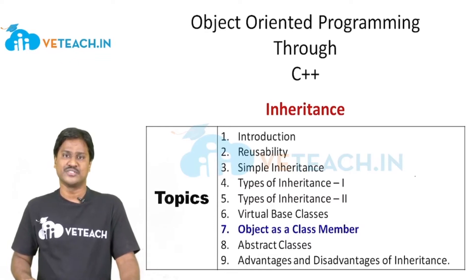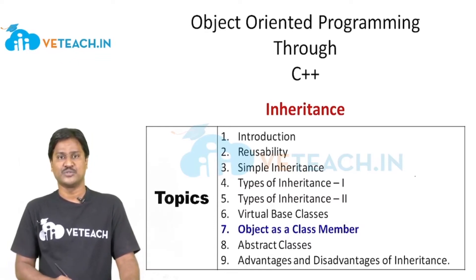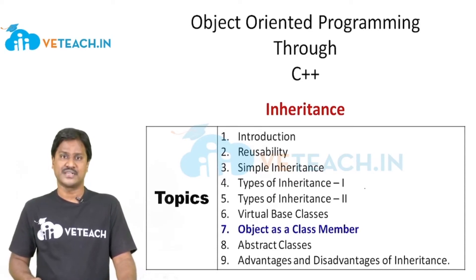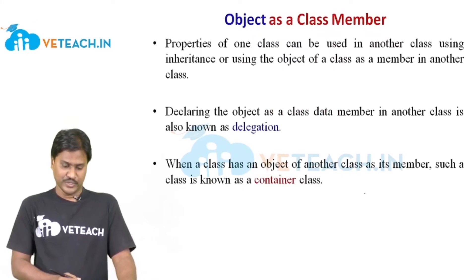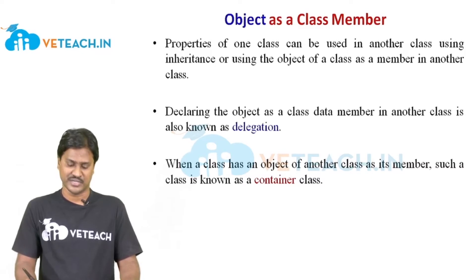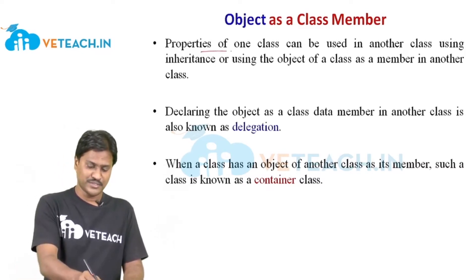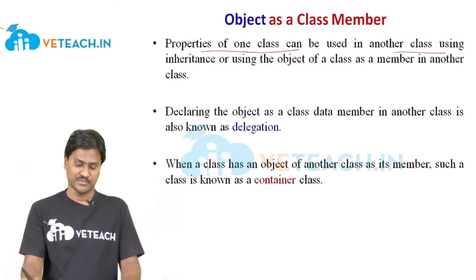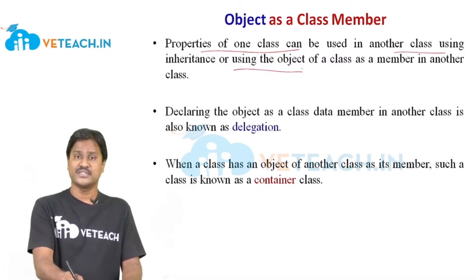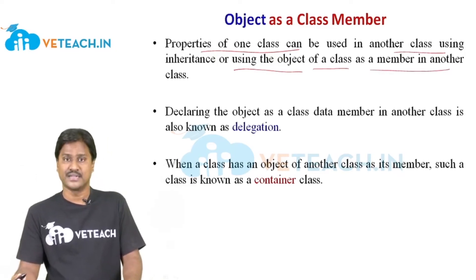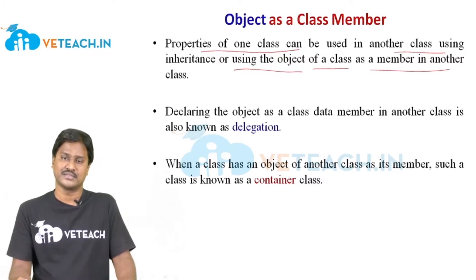Hello friends, welcome to Vteach. Object-oriented programming through C++, session: inheritance, and topic is object as a class member. We learned the inheritance topic — how properties can be extended from one class to another class. Here, properties of one class can be used in another class using the inheritance concept, and one key point is using the object of a class as a member of another class — this is the concept called object as a class member.